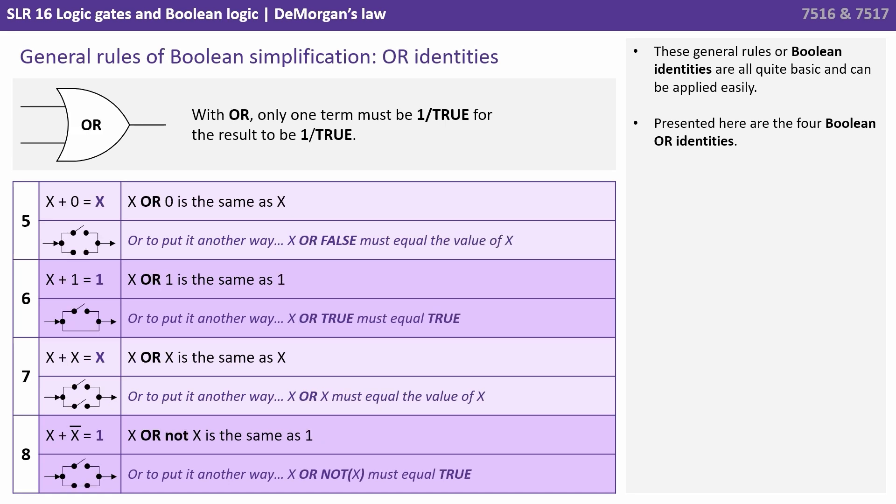Here we are presenting you with the four Boolean OR identities. Remember, with an OR gate, only one of the inputs has to be true for the result to be true. So the first one is X or zero is the same as X. Because if X is zero, then the output will be zero. If X is one, the output will be one. The next one is X or one is the same as one. Because we already have an input here of one, it doesn't matter what X is. The output is always going to be one. We have X or X is the same as X and X or not X is the same as one.